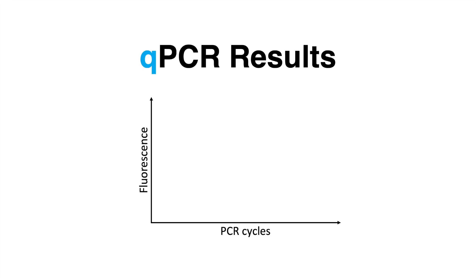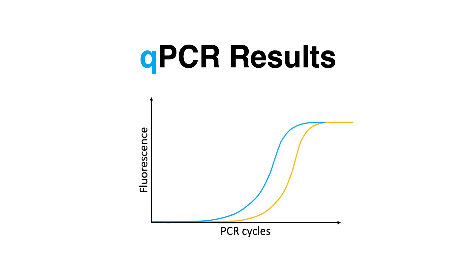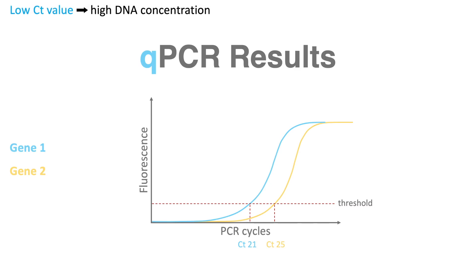In both assays, the increase of fluorescence along product amplification generates a curve. During gene expression analysis, multiple genes can be compared. The number of cycles after which the signal intensity reaches the threshold is shown as the CT value. The presence of gene 1 is detected after 21 cycles, whereas the presence of gene 2 is detected in cycle 25. In general, low CT values go along with high DNA concentrations, and high CT values mean that signals are detected late, indicating low DNA concentration.